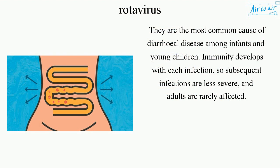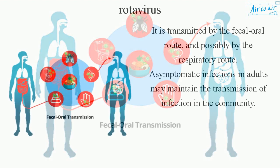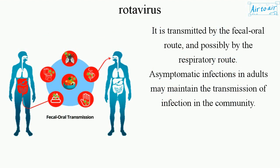Immunity develops with each infection, so subsequent infections are less severe, and adults are rarely affected. It is transmitted by the fecal-oral route, and possibly by the respiratory route. Asymptomatic infections in adults may maintain the transmission of infection in the community.